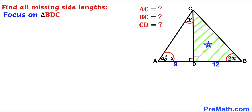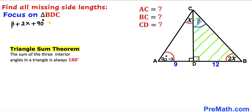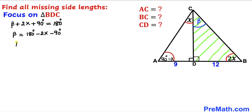Now let's focus on the other right triangle BDC. Let's assume this angle is beta and recall the triangle sum theorem. The sum of these three interior angles must equal 180 degrees. So angle beta plus 2x plus 90 degrees equals 180 degrees. Moving 2x and 90 to the right hand side, angle beta becomes 90 degrees minus 2x.